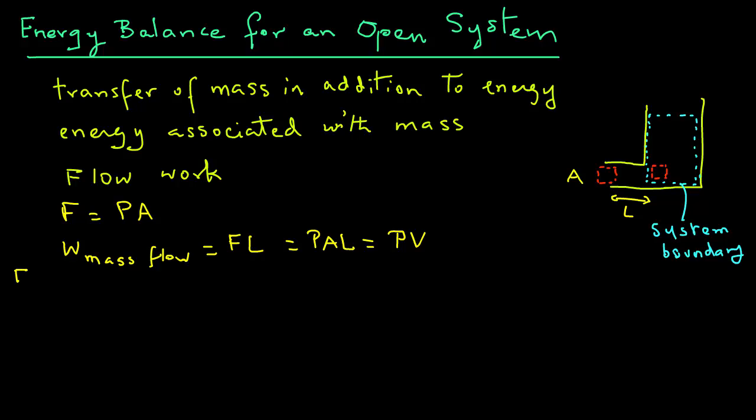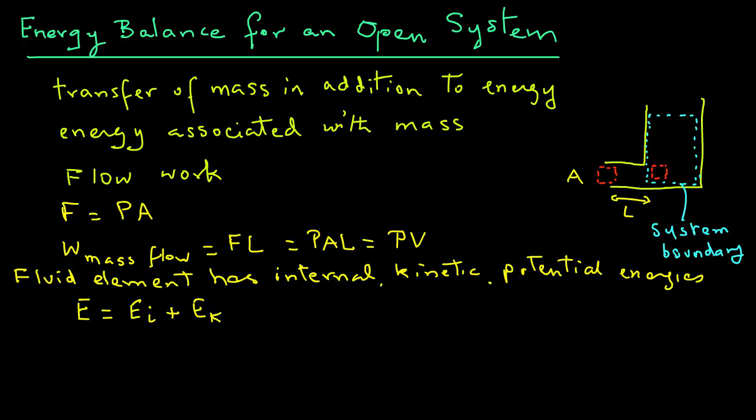Now the fluid element has got internal, kinetic, and potential energies. And we must also account then for energy associated with the flowing fluid. So E will equal EI plus EKE plus EPE plus P times V, which is due to the flow work. So energy then equals the internal energy, EI, plus MU square over 2 for the kinetic energy, plus MGZ for the potential energy, plus PV.